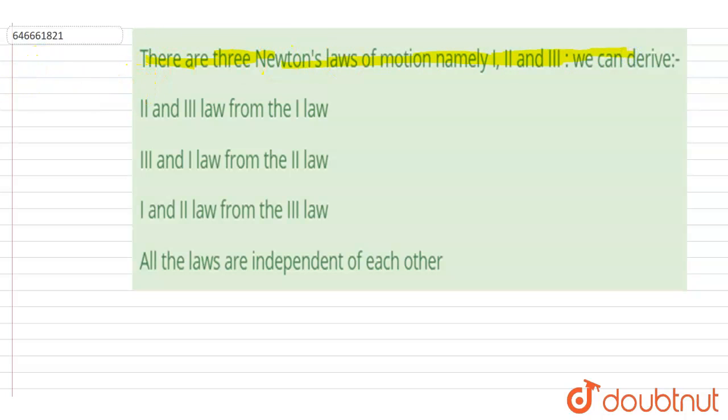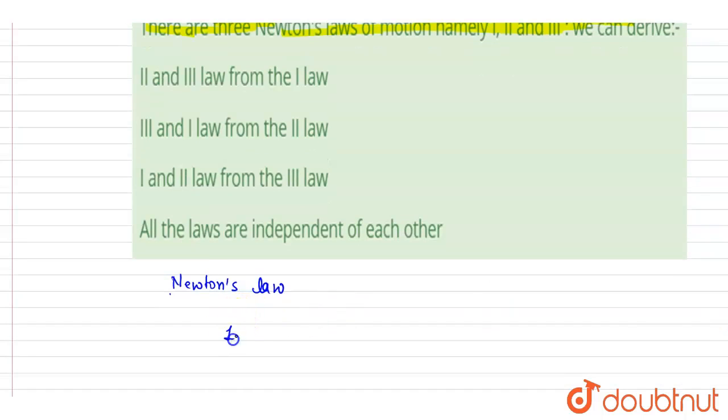We can derive - you have to check out of ABCD which option is the correct one. So we know that the Newton's - if I talk about Newton's law, Newton's law first, second, and third. So first law is about inertia.